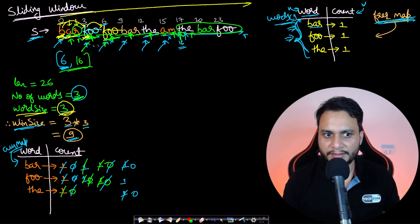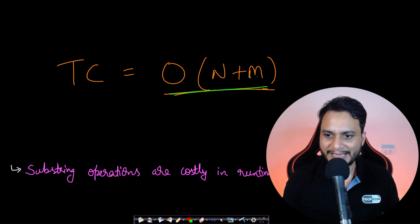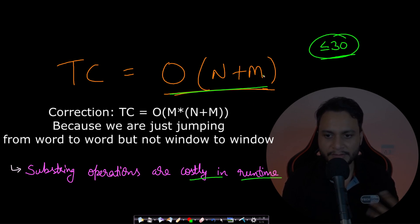For time complexity, if we take the string length as order of n and the window size as order of m, each run through the string is O(n + m), and we perform this run m times (once per offset). So the overall complexity is O((n + m) * m). Note that substring operations are costly at runtime, so even though the complexity looks manageable, actual execution time can be high.